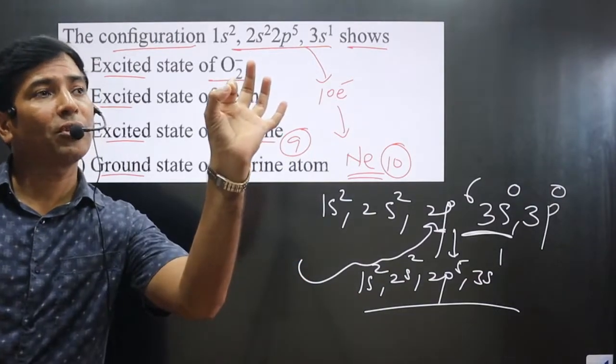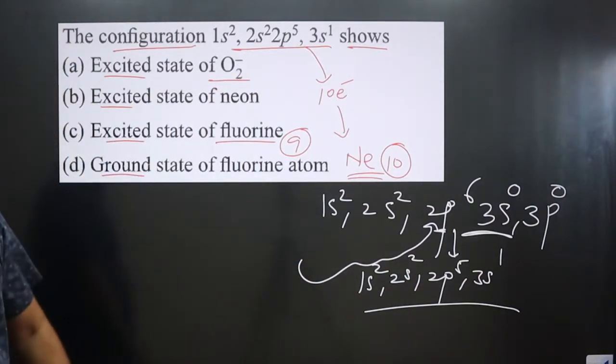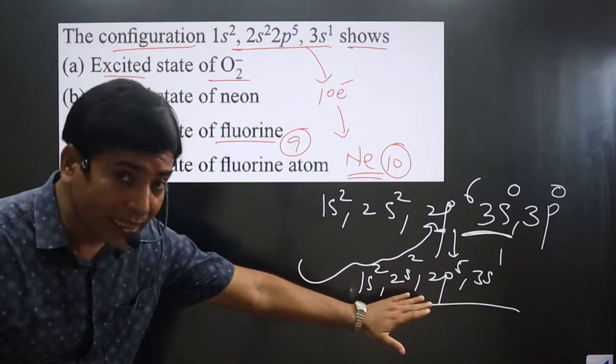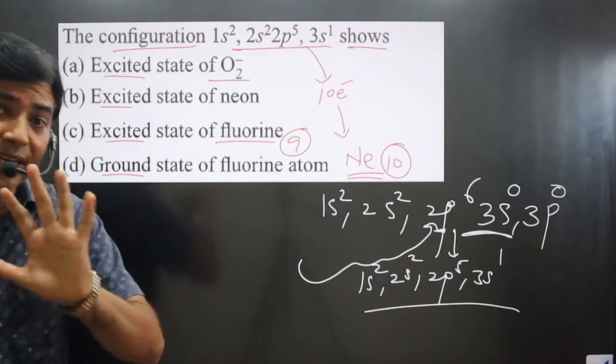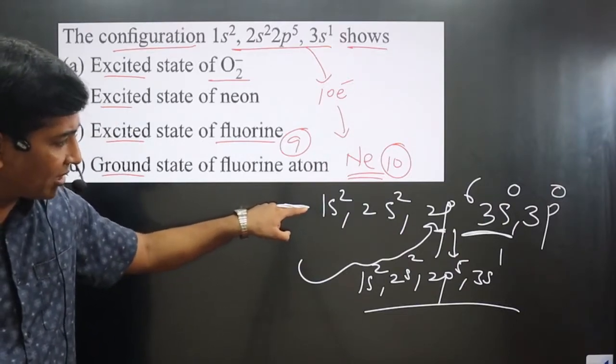This is the excited state of neon because in this case we have 10 electrons, and in the ground state also 10 electrons. This is the ground state of neon and this is the excited state of neon.